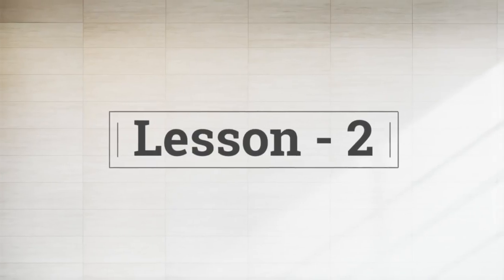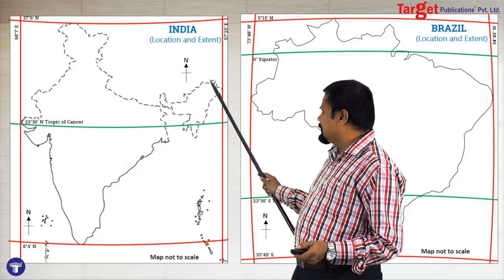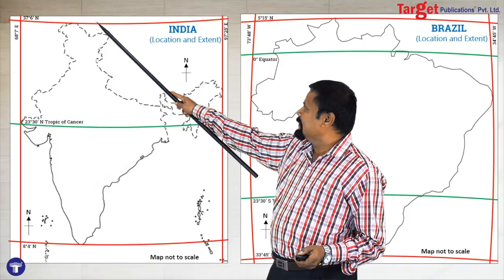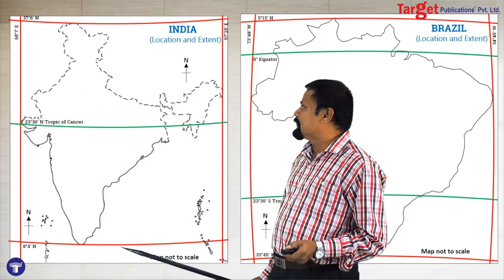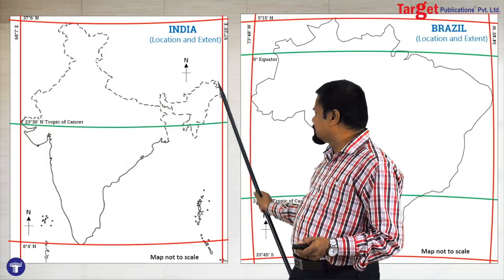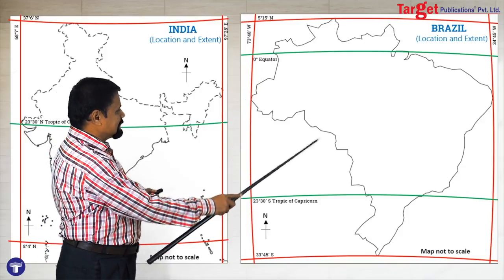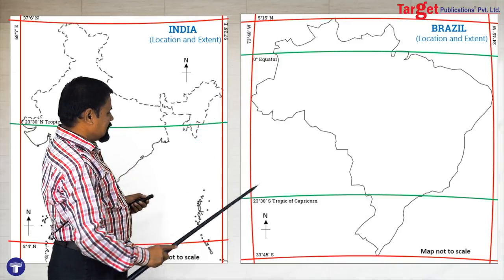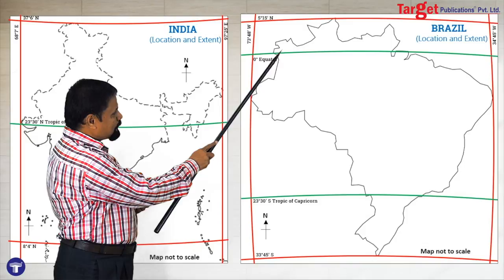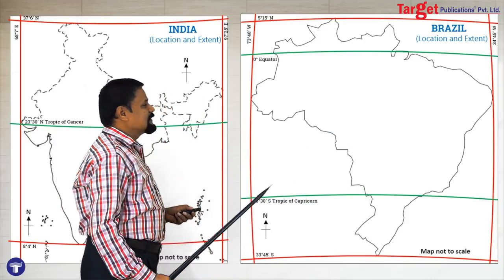This is lesson number two. The first question is: describe the latitudinal and longitudinal extent of India and Brazil. You will draw the India map first with the stencil, then draw the northernmost latitude and southernmost latitude — you can write the degrees also — then mark the Tropic of Cancer, then the westernmost longitude and easternmost longitude. In the same way, draw the Brazil stencil and show the northernmost latitude, southernmost latitude with degrees, the equator, and the Tropic of Capricorn, along with the westernmost and easternmost longitudes.